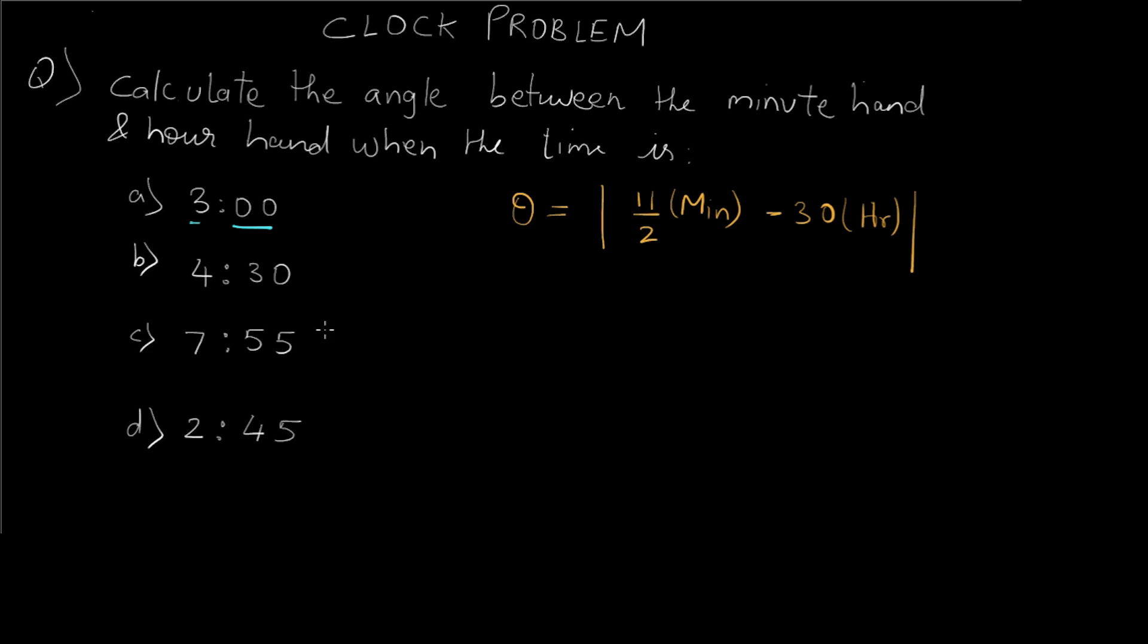Let's see for the third question. Here the hour hand is at 7 and minutes are 55, so putting these values in the formula we get 11 upon 2 into 55 minus 30 into 7, so that would be 92.5 degrees. And for the last question we have the hour hand at 2 and the minute hand at 45.